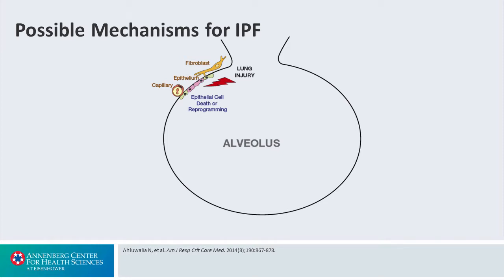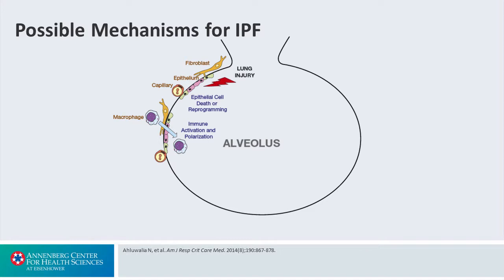In this first presentation, we see the fibroblast and epithelium interacting with lung injury leading to some kind of process. We are expecting to see a certain amount of cell death or reprogramming at the capillary and epithelial level. As we move to the next stage, the results of that lung injury lead to an inflammatory process — immune-mediated, with immune activation and polarization of macrophages that get drawn into the alveolar space.